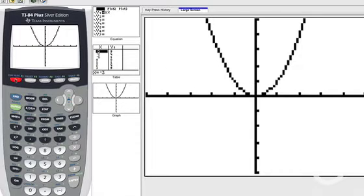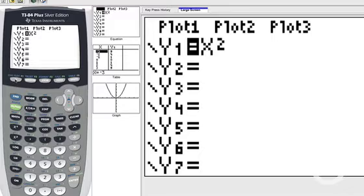So you guys get the general idea of what the graph of y equals x squared looks like. Anytime you're asked to graph an equation that involves an x squared, it's always going to have that same parabola shape.